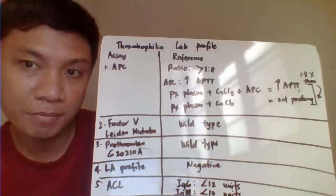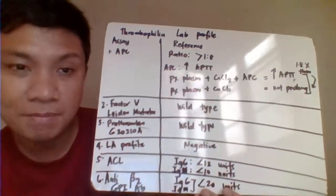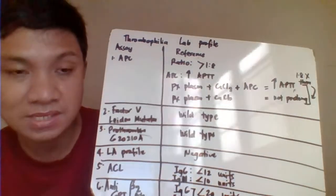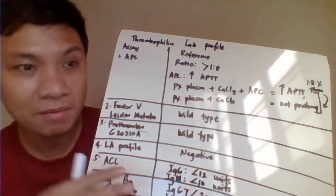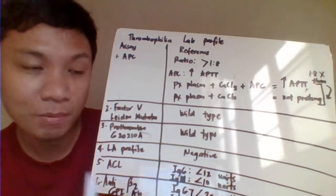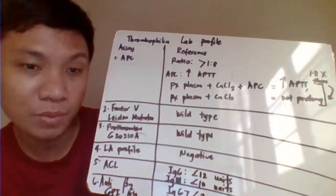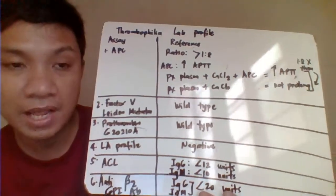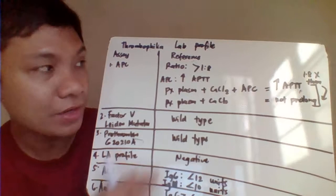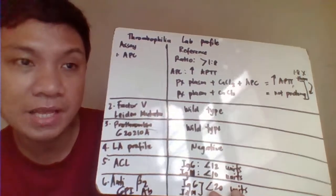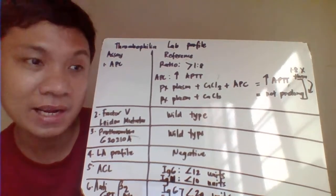The thrombophilia laboratory profile lists normal reference values. For activated protein C (APC), the normal reference should be more than 1.8, with respect to the APTT clotting time result. When APC is added to patient plasma with calcium chloride, it digests Factor V and Factor VIII, which should produce a prolonged APTT.